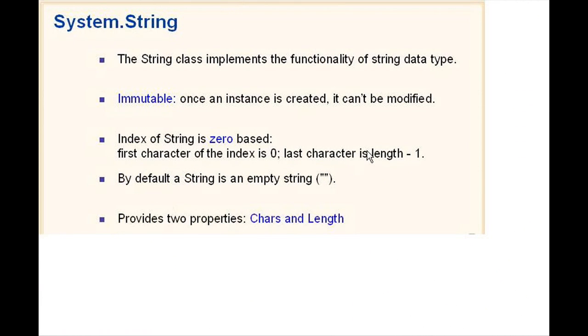So this is going to be very interesting, and I'll give you a lot of details on both. The System.String is the string class that implements the functionality of that string data type, that reference type. It's immutable, so once you have an instance, you can't modify it.